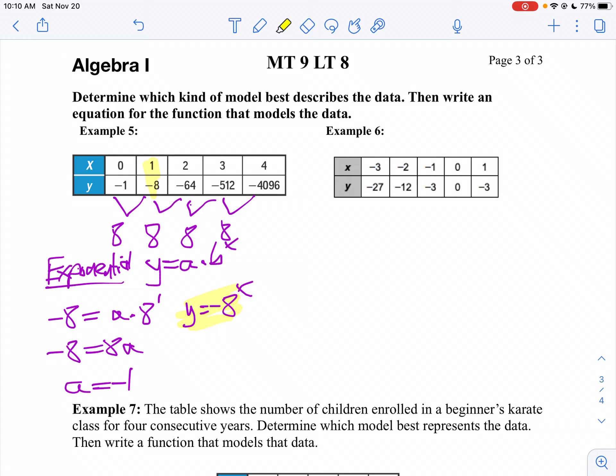Let's take a look at our next one. Negative 12 minus negative 27, that's 15. Negative 3 minus negative 12, that's 9. I can see it's not linear right away. Zero minus negative 3 is 3. Negative 3 minus 0 is negative 3. Then 9 minus 15 is negative 6. 3 minus 9 is negative 6. Negative 3 minus 3 is negative 6. So this tells me it's quadratic.